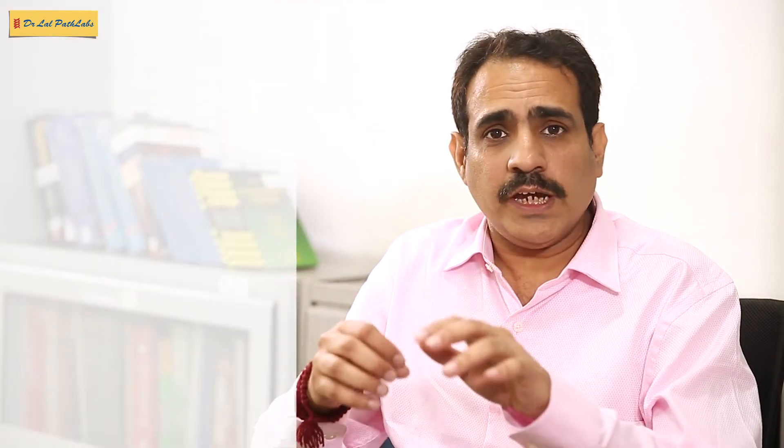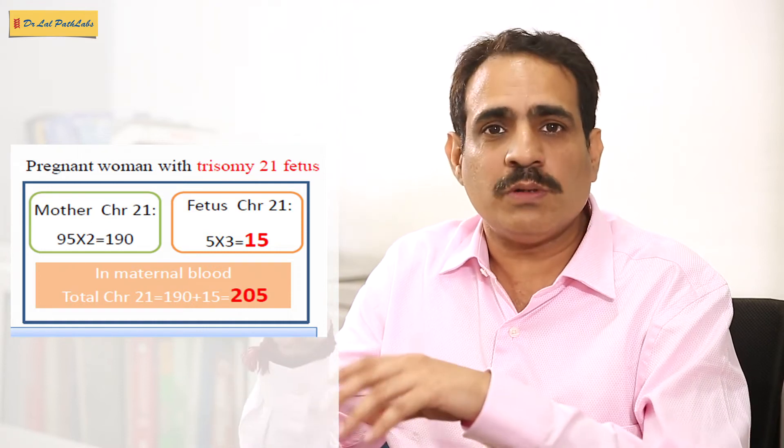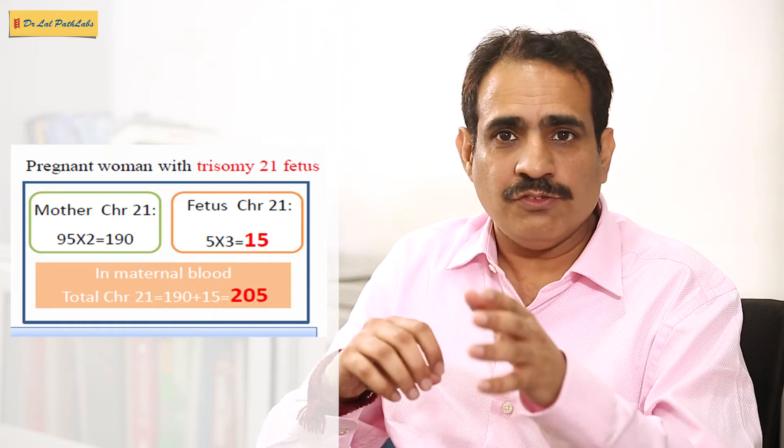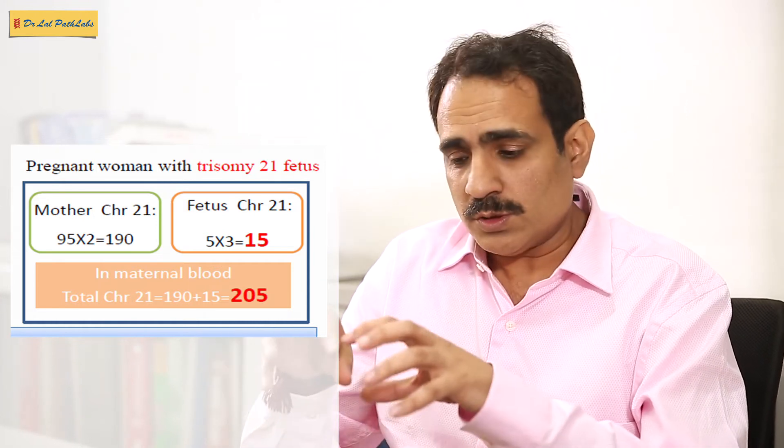In scenario 2, again 95 percent is coming from the mother, so 95 multiplied by 2 gives 190 copies from the mother. But in this case there are three copies of chromosome number 21, so 3 multiplied by 5 gives a total of 15 copies from the fetus. Adding them together, there will be 205 copies of chromosome 21. The art lies in distinguishing these 205 copies in a Trisomy case as opposed to 200 copies in a normal case, and a lot of statistics goes into this prediction of aneuploidies in the fetus.